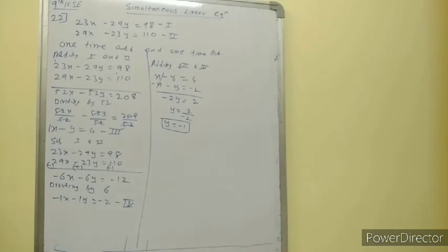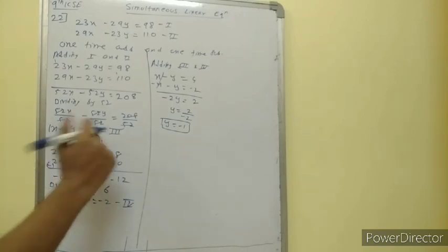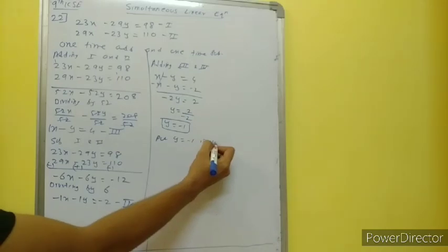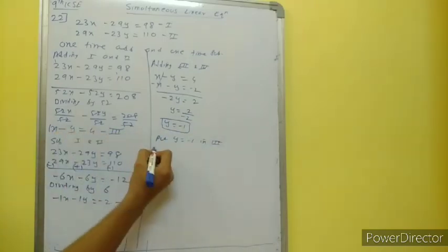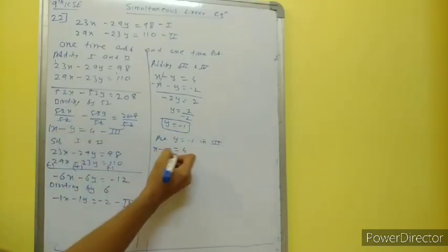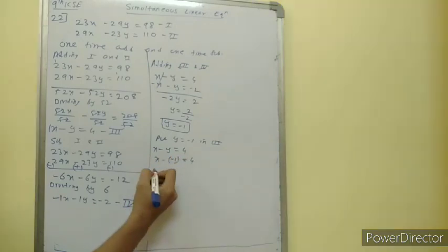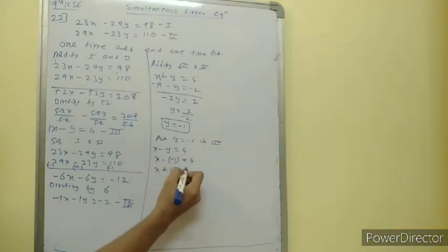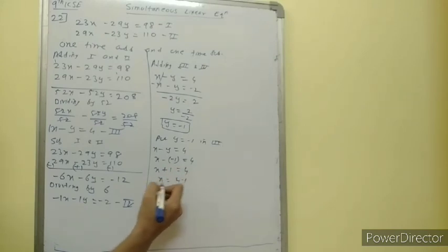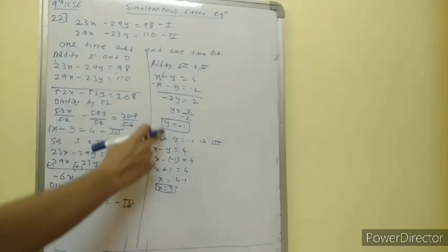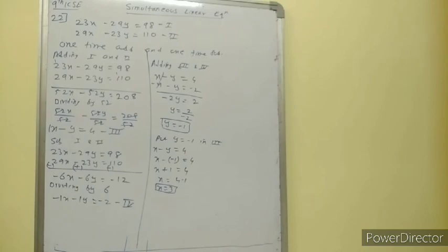Now put value of y in equation number 3: x minus y is equal to 4. y is equal to minus 1, so x minus (minus 1) is equal to 4; x plus 1 is equal to 4; x is equal to 4 minus 1. We have the value of x is equal to 3. So x is equal to 3 and y is equal to minus 1.